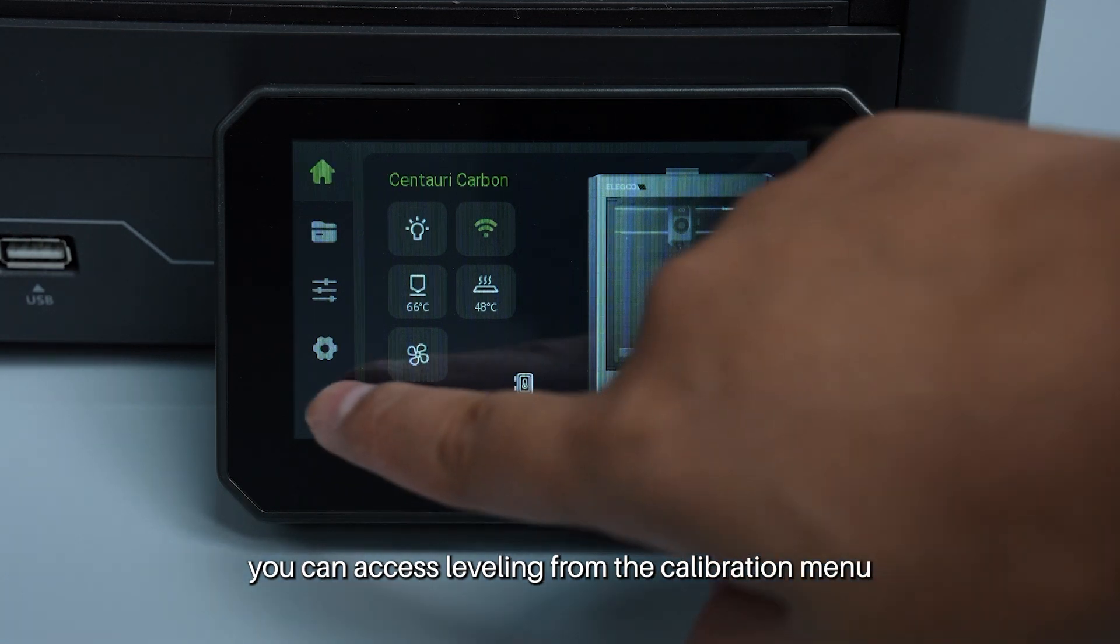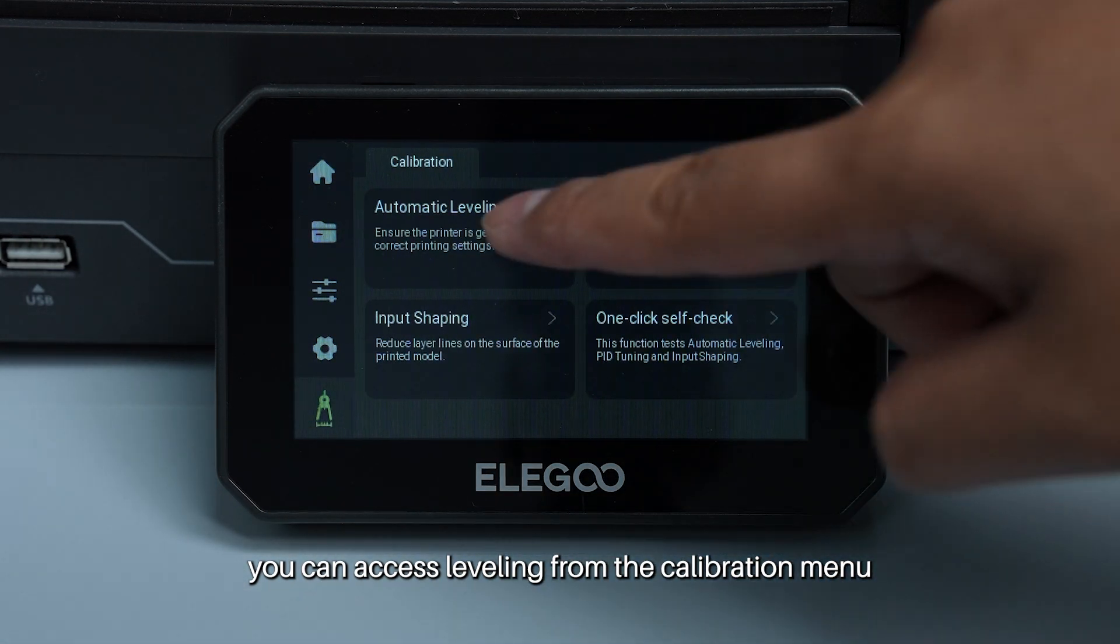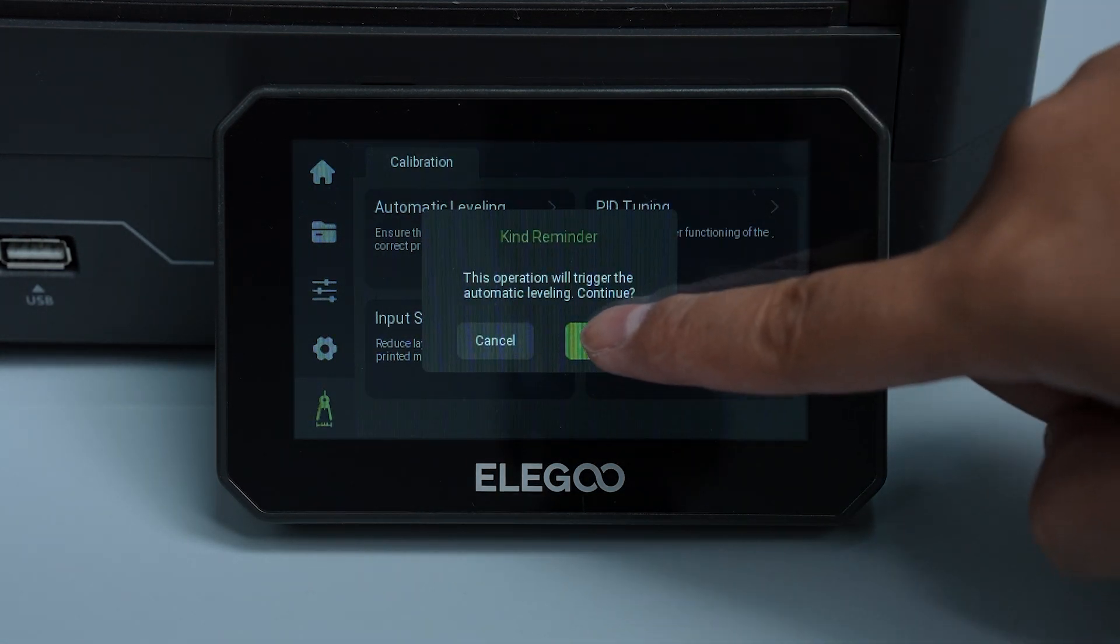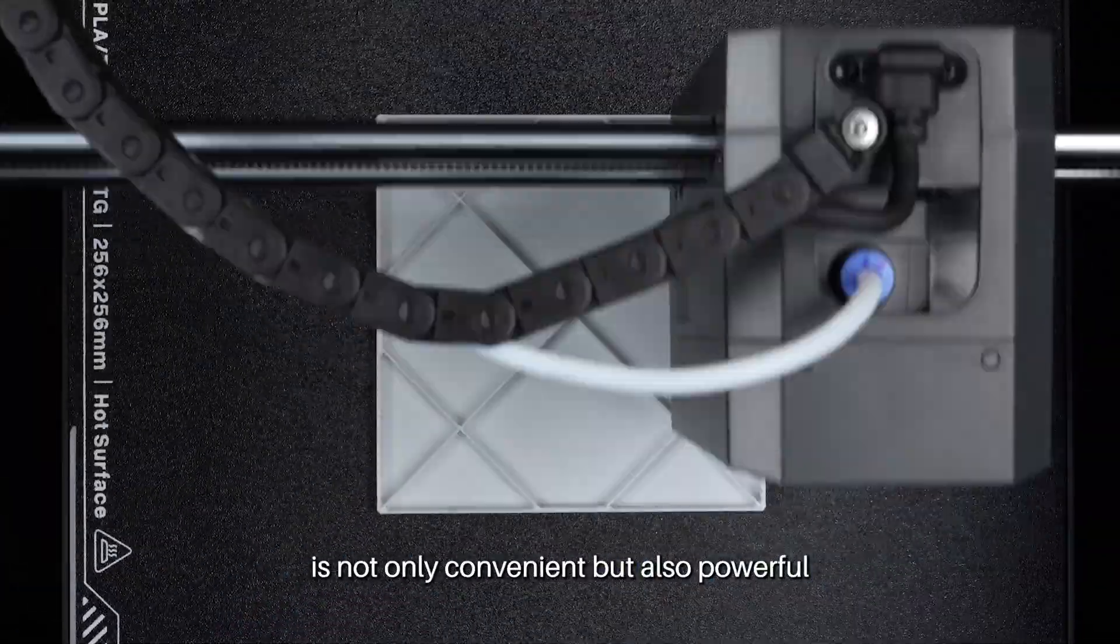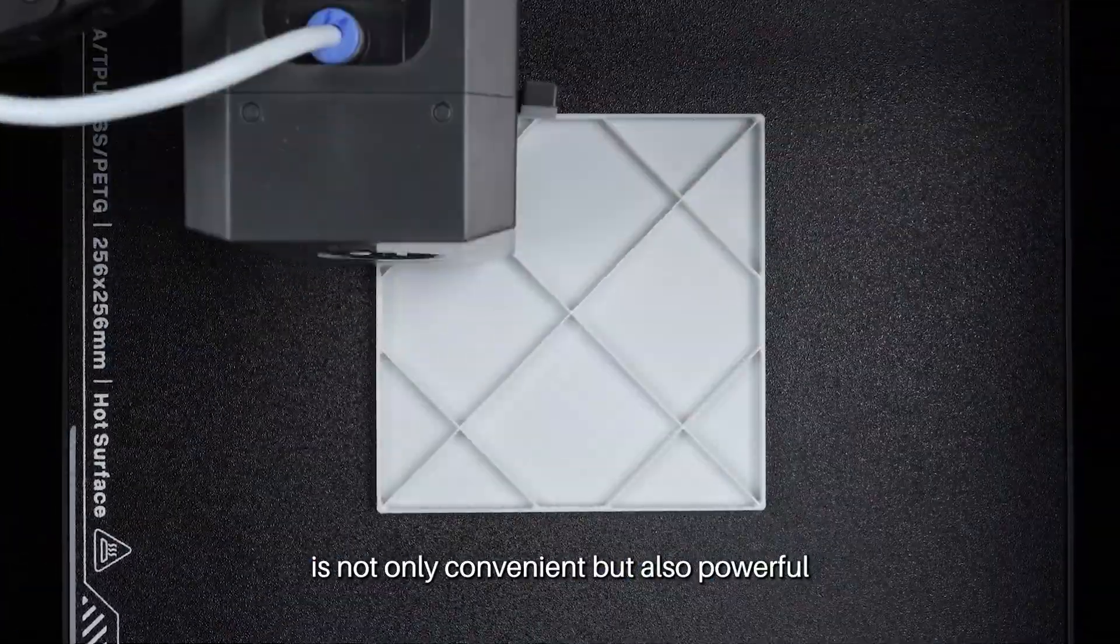Alternatively, you can access leveling from the calibration menu whenever you need it. The calibration function on the Centauri Carbon is not only convenient but also powerful.